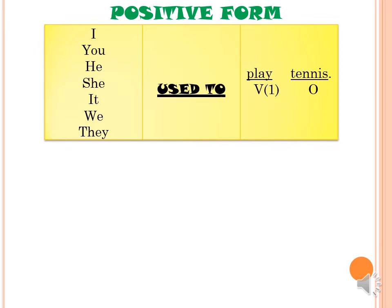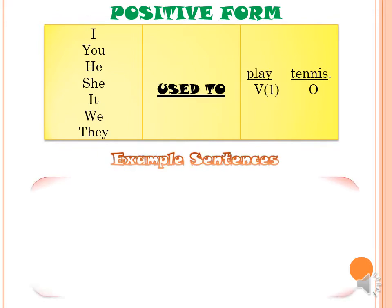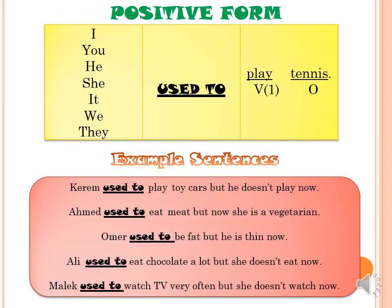All subjects — I, you, he, she, it, we, and they — are followed by 'used to' plus Verb 1. For example: I used to play tennis. Another example: Karim used to play toy cars, but he doesn't play now.